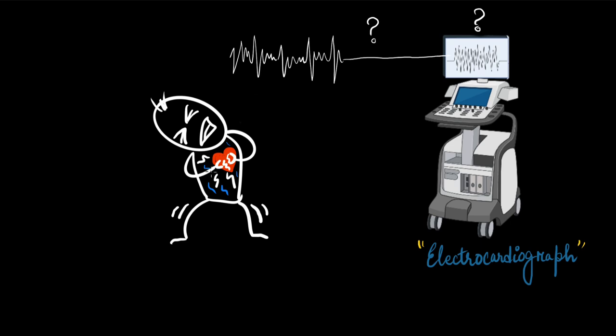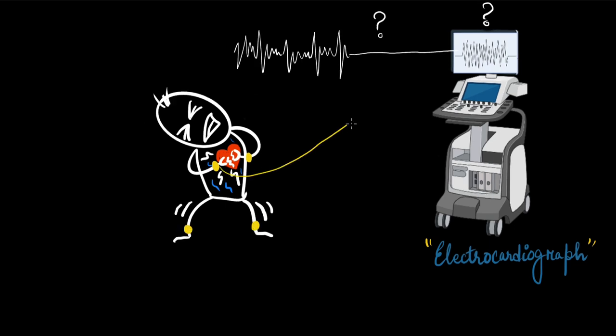And for this electrocardiograph to work, some leads are attached to the wrist and ankle of the patient and then through some wires, they are attached to the machine. And then the machine reads the electrical activity. Now, it is natural for you to wonder how a machine can read the electrical activity of the heart through any other body part like the wrist or the ankles because that is where we have placed the electrodes.